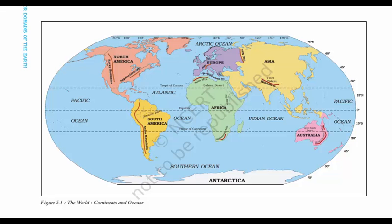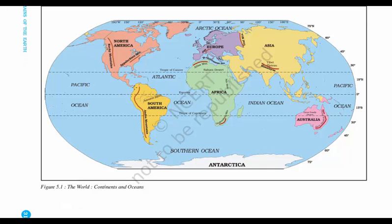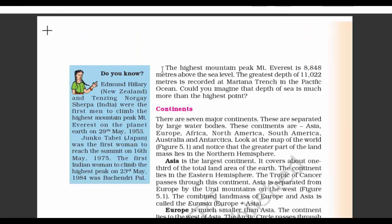Coming to the second page, we can see a large world map. As you can see, all the oceans are connected, interconnected. We roughly have five oceans: Pacific, Atlantic, Arctic, Indian and Southern Ocean. The highest mountain peak is Mount Everest, which is 8,848 meters above sea level. And the deepest point, going down, is recorded as 11,022 meters at Mariana Trench in the Pacific Ocean. So the depth of the Pacific Ocean is much higher than the height of Everest.